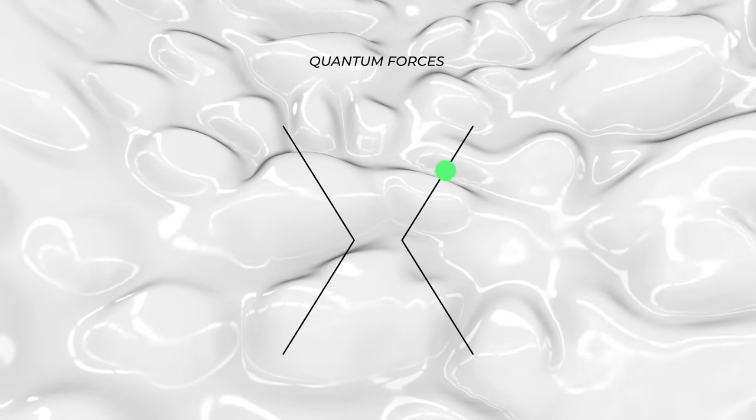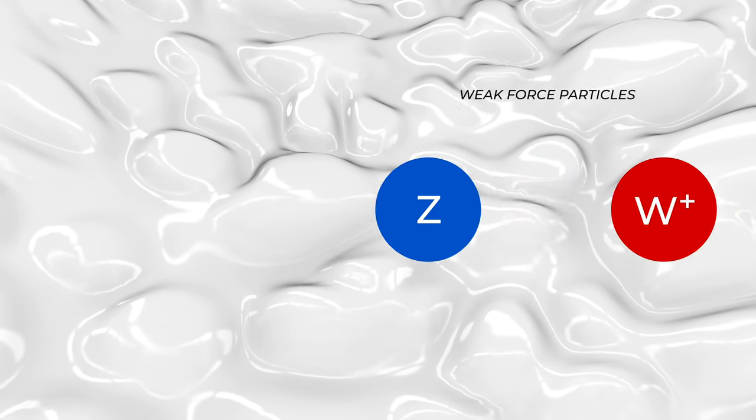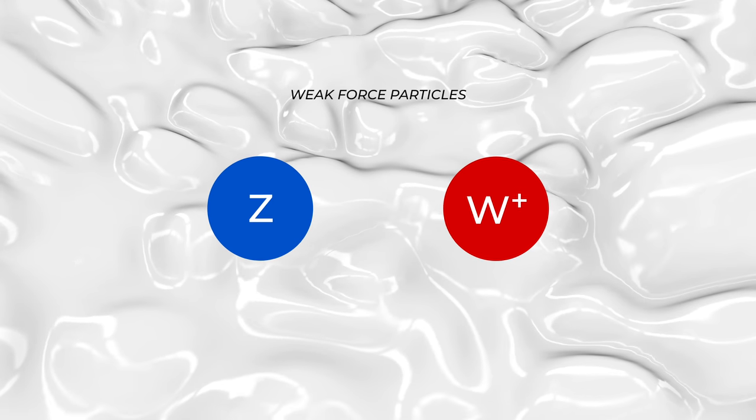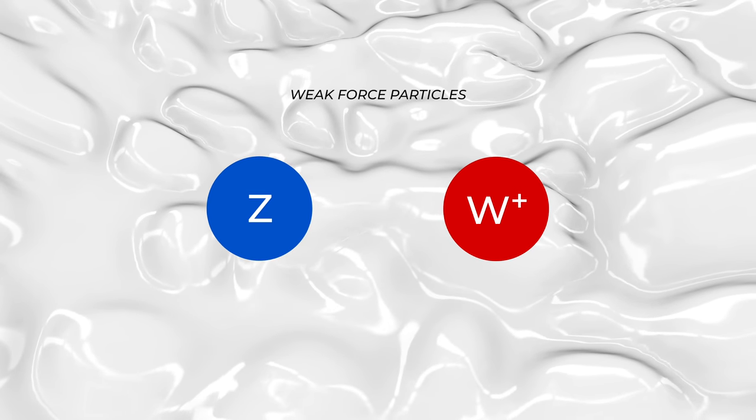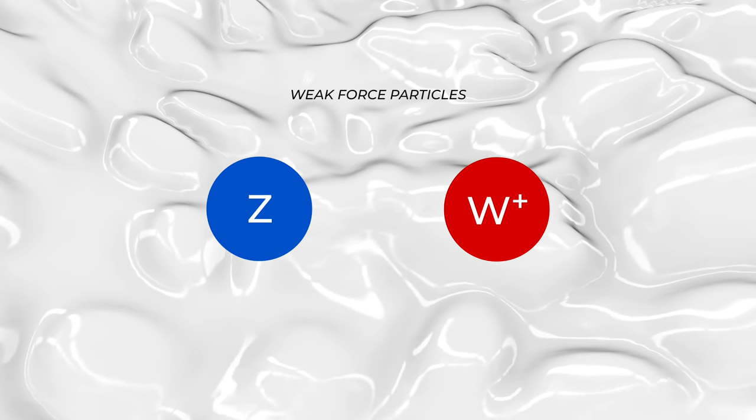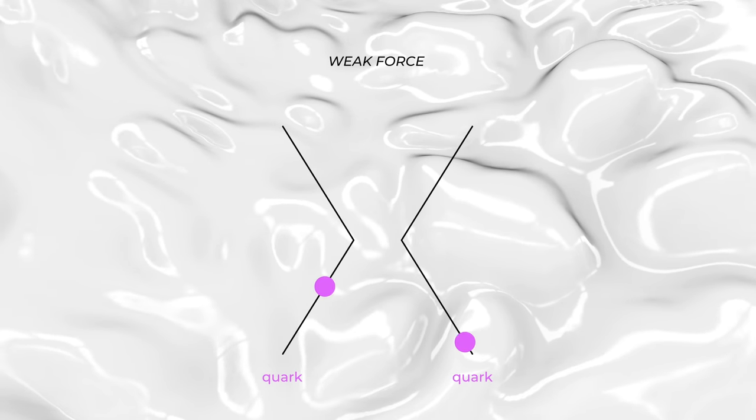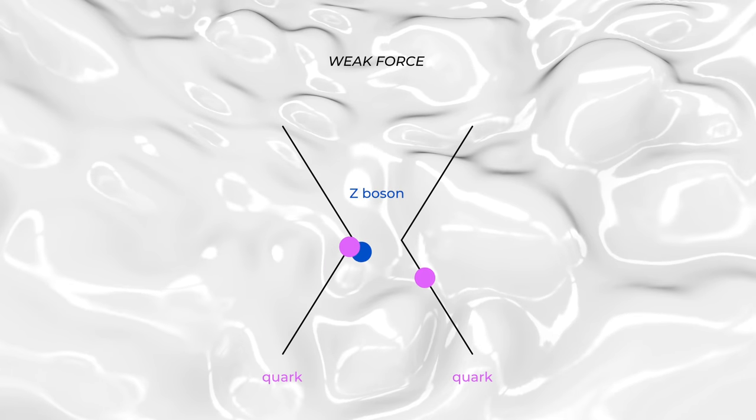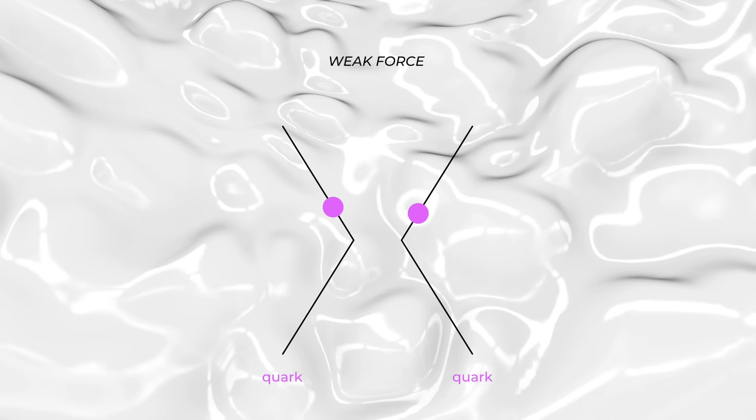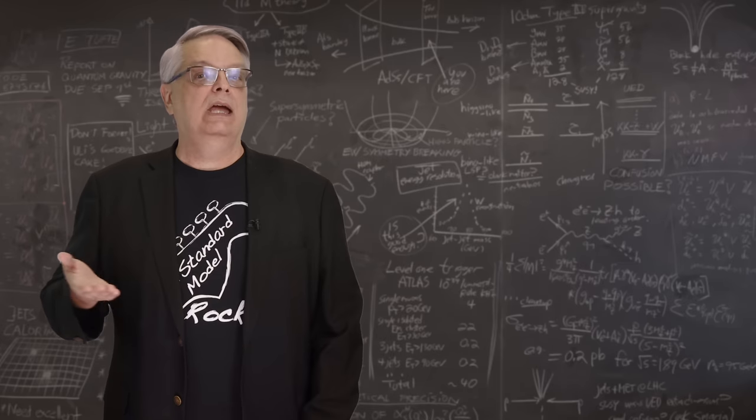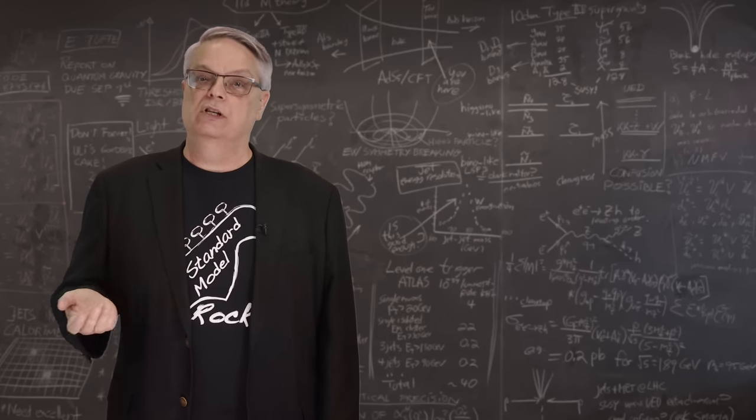In the weak nuclear force, there are actually two force carrying particles. There's the electrically neutral Z boson and the electrically charged W boson. In the case of the weak nuclear force interaction, some subatomic particle, say a quark, can emit a Z boson. The Z boson then zooms over to another quark, which absorbs it. That's at least one way in which the weak nuclear force is transmitted.